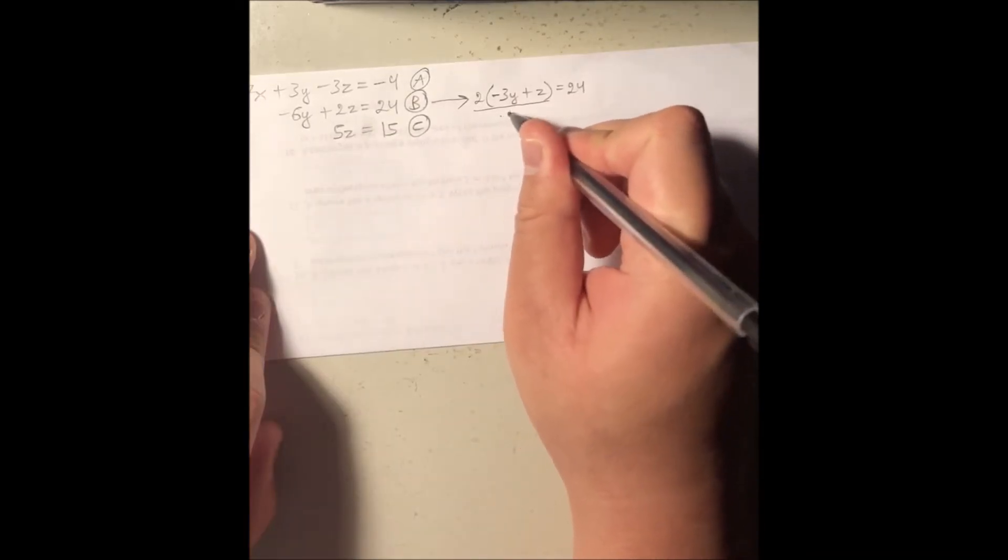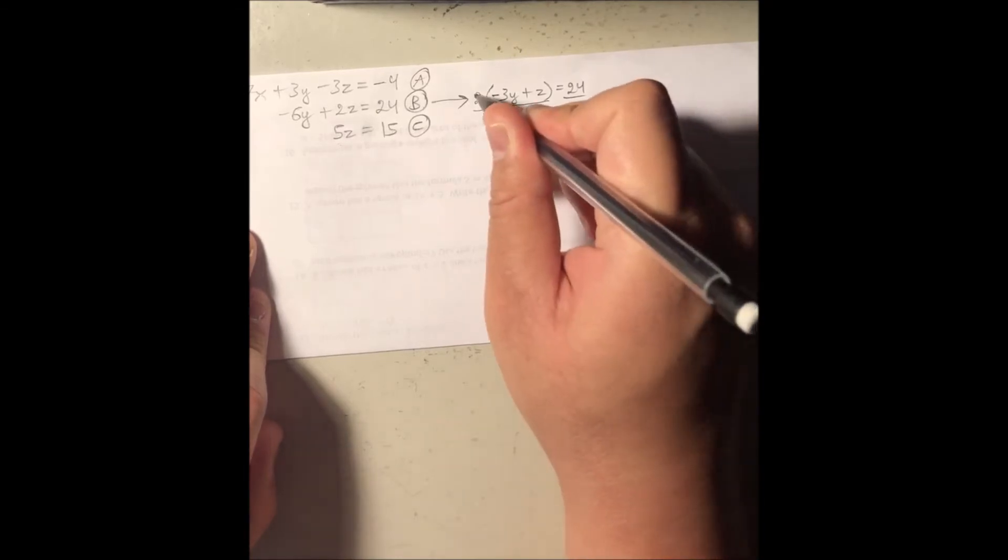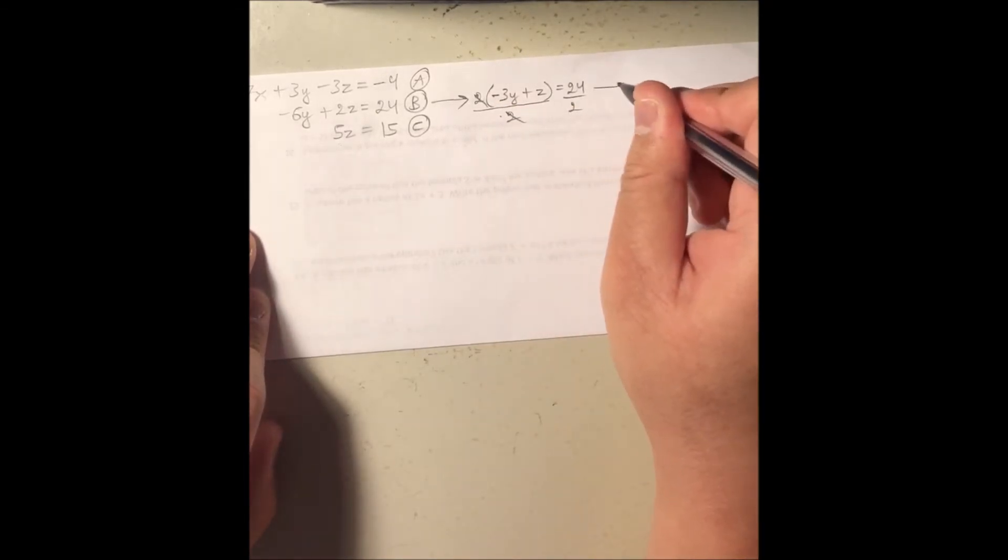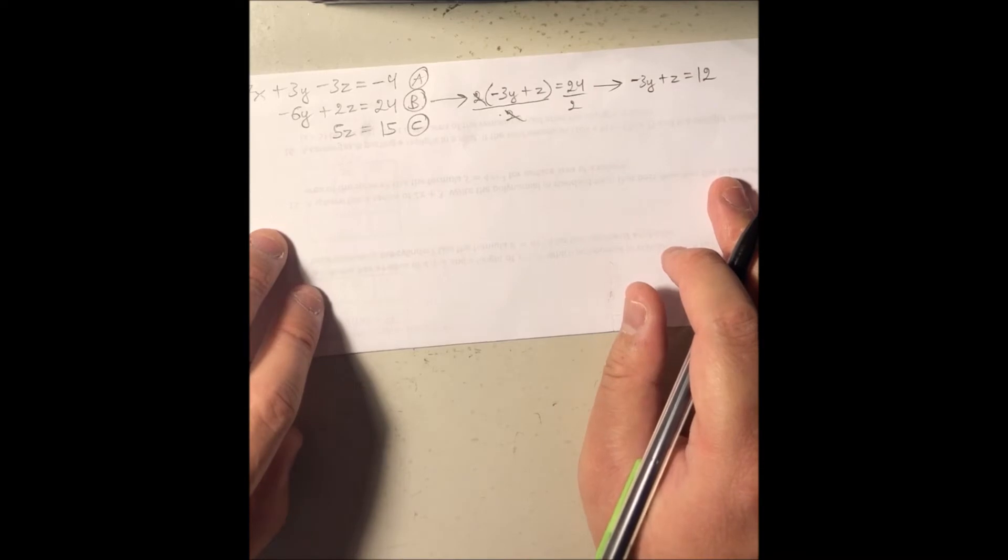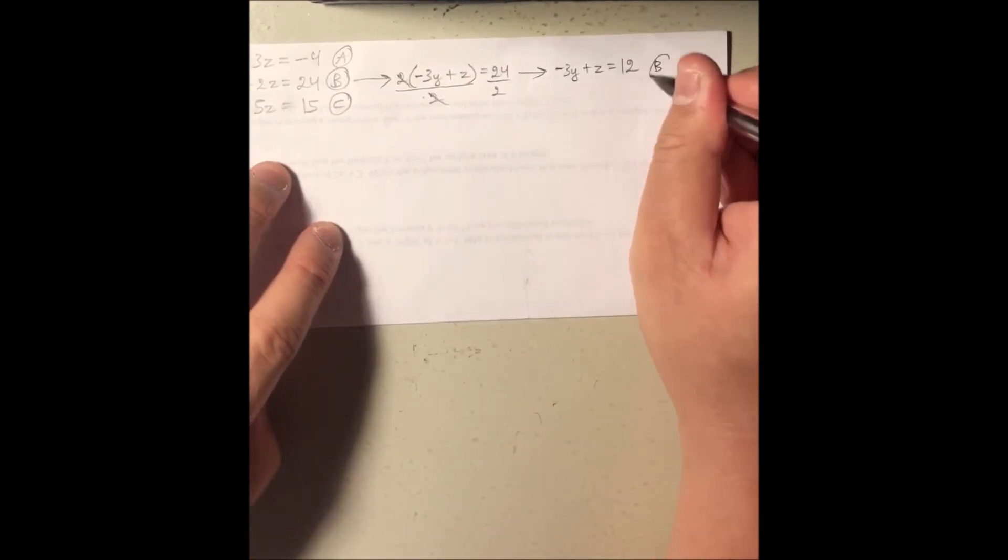Now if I divide both sides by 2, my new B equation now is gonna be negative 3y plus z equal to positive 12. So this is my B equation right here.